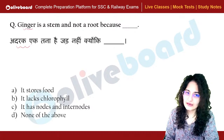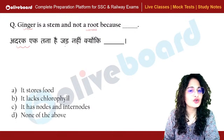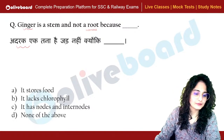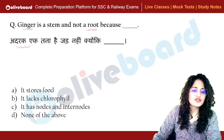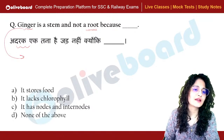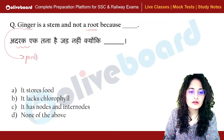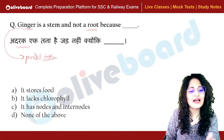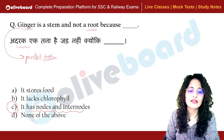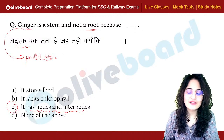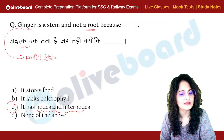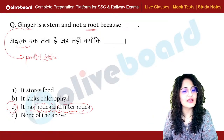Ginger is a stem, not a root. It grows parallel to the soil. It has nodes and internodes — you will be able to see those nodes and internodes. Chlorophyll is not used for differentiation. Nodes and internodes are not present in roots; they are always present in stems.